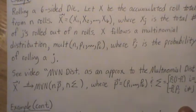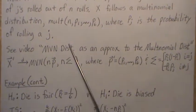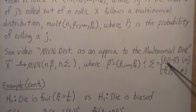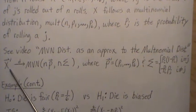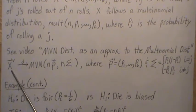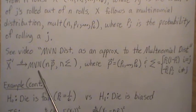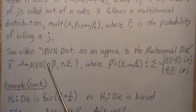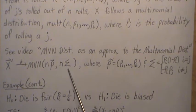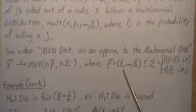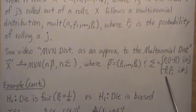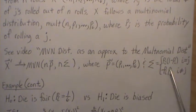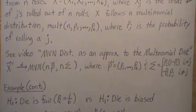So p2 would be the probability of rolling a 2. I have a video called 'Multivariate Normal Distribution as an Approximation to the Multinomial Distribution,' and there we prove that if X follows a multinomial distribution, it limits in distribution to a multivariate normal distribution with parameters n times p and n times Sigma, where p is the vector of probabilities, Sigma has p_i times (1 minus p_i) down the diagonal, and minus p_i times p_j off the diagonals. I'll point you back to that video for more detail and all the derivations.